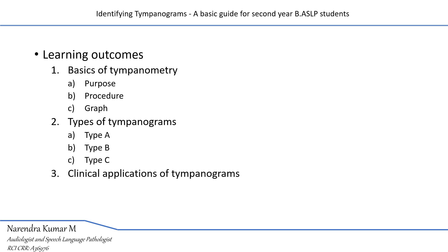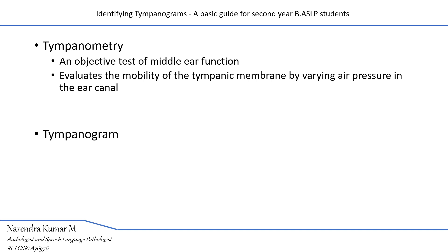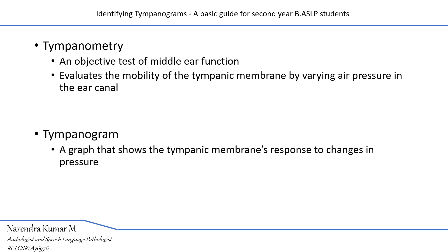They will also be able to delineate the clinical applications of various tympanograms. Tympanometry is a procedure — an objective test of middle ear function. This evaluates the mobility of the tympanic membrane by varying the air pressure in the ear canal. A tympanogram is a graphical representation of the tympanic membrane's vibration with respect to changes in air pressure in the ear canal.